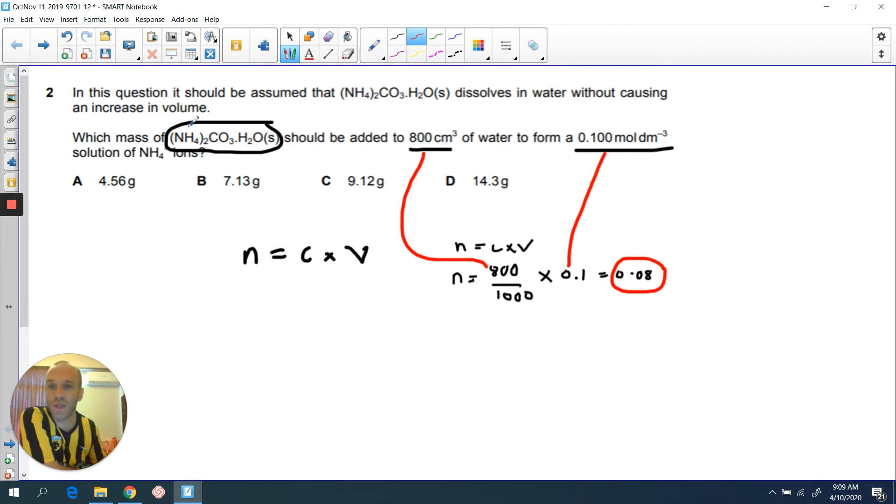In other words, you're going to need 0.08 moles of this compound. But it's asking you for the mass. They want you to find out the mass. So you're going to use your second key equation: number of moles equals the mass over the molar mass.